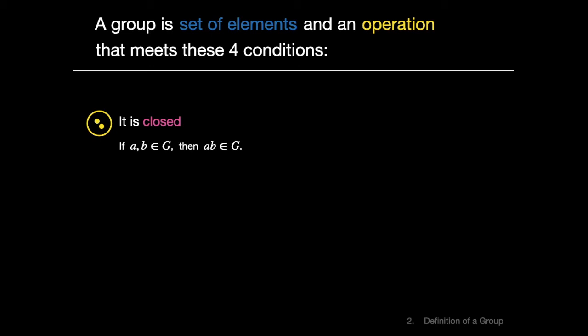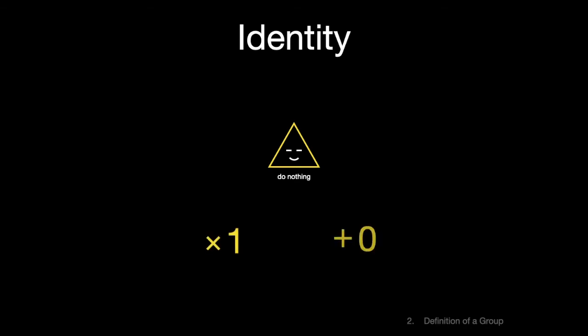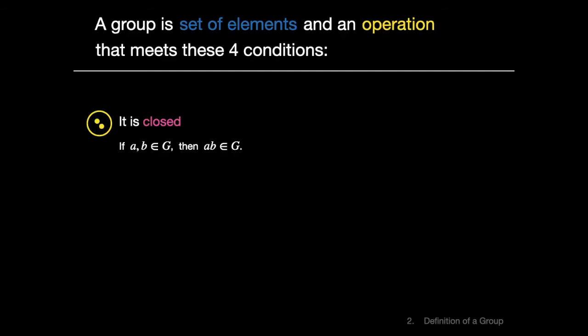The next property we require is that the group has an identity element. This is the do-nothing action. In the case of our group of symmetries on a triangle, it's the action that doesn't move the triangle. Think of multiplying by one or adding zero. Our group's got a rest now and then. So there's our second condition. Our group needs an identity.